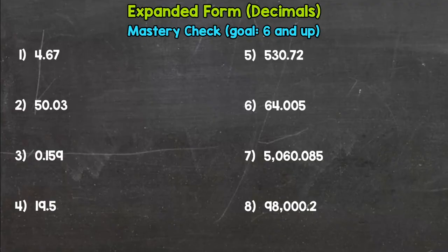So let's start with number one here. We have four and sixty-seven hundredths. So we have a four with a value of four plus a six with the value of six tenths and a seven with the value of seven hundredths.